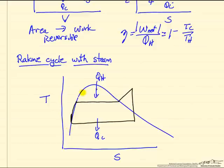So this blue line is the phase envelope where saturated liquid is on the left, saturated vapor is on the right, and so we're adding heat here in a boiler.